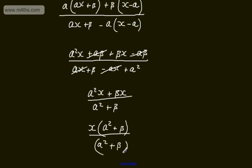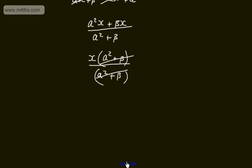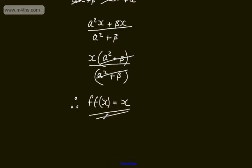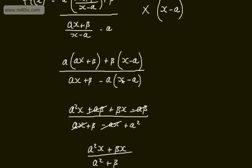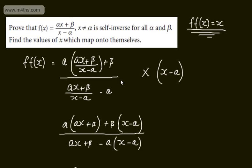And in the denominator we have alpha squared plus beta. We can see the alpha squared plus beta terms cancel, and that's going to simply leave us x. Therefore, we can say f of f of x will be equal to x for all alpha and beta. So we've done that by simply using composite functions.